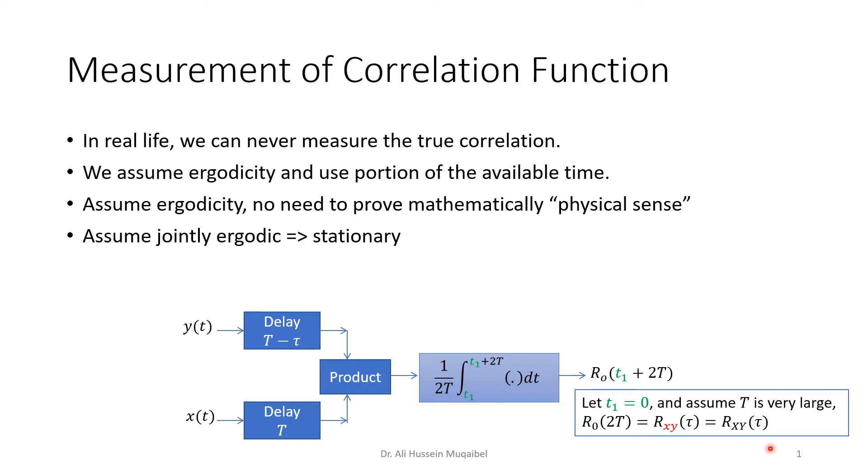That will give you an idea about the cross-correlation at tau. If you want different values of tau, this will give you just one number. For different values of tau, we change the delay here, and we repeat the evaluation. The same process, the same block diagram which is used for cross-correlation, can be used to measure the autocorrelation. So what we're going to do, if you want the auto-correlation, we'll take one branch, you cancel X, for example, and you take Y, Y, or you cancel Y and take X, X. So we feed the same input to the two branches, and we get the auto-correlation.